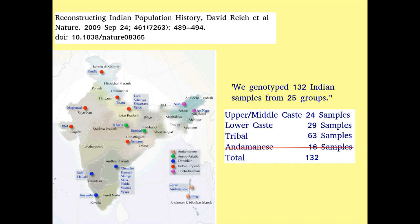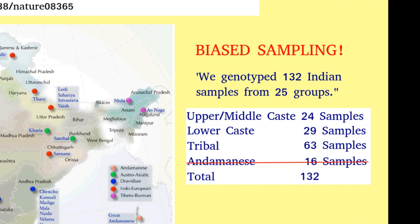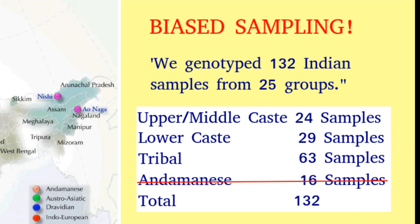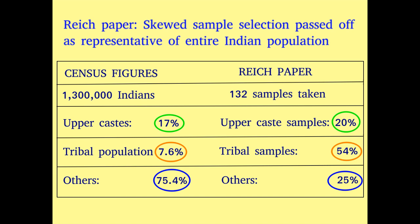A man called David Reich, a big name in genetics, instituted an extraordinarily biased study. Claiming that all 1.3 billion Indians were being studied, a paltry 132 samples were taken and these samples too were not representative of the Indian population. Reich and team took 20% of their samples from upper castes, and although tribes form just 7.6% of the Indian population, 54% of the samples were from tribals. Other groups who form 75% of the Indian population were barely sampled. Any neutral reviewers would have trashed this selection as a skewed one, but the incestuous peer review process of Western journals allows bias to be published as science.